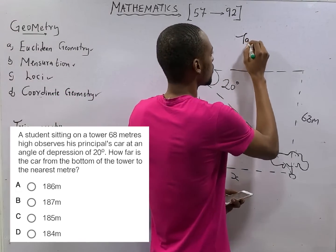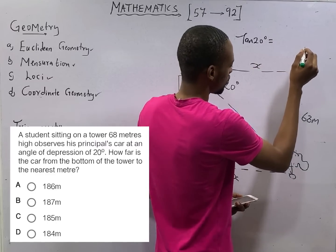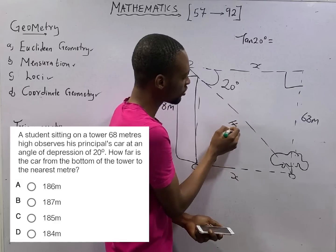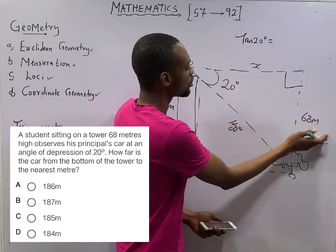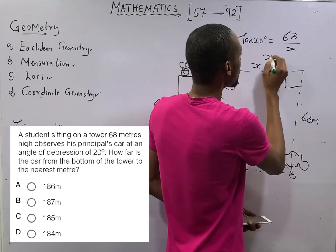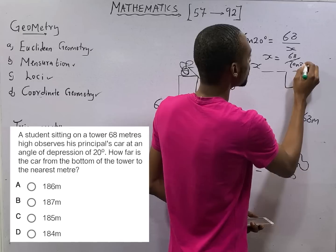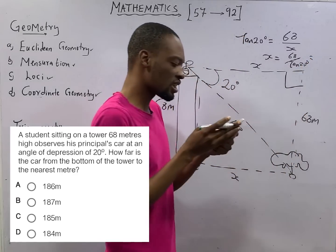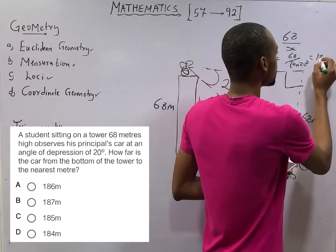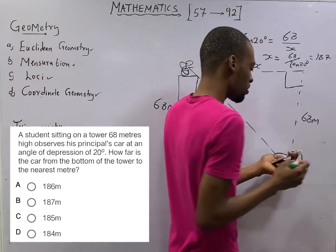So tan 20 degrees is equals, this is the right angle. So the part facing the right angle is the hypotenuse. This is the adjacent, this is the opposite, 68 over S. S is equals 68 over tan 20 degrees. And 68 over tan 20 degrees is 187. This is 187 meters. That is your answer.